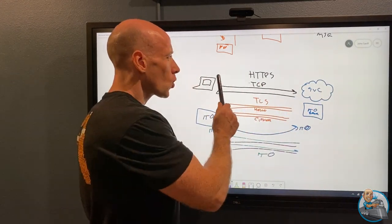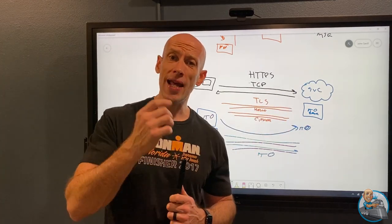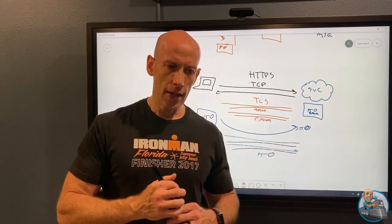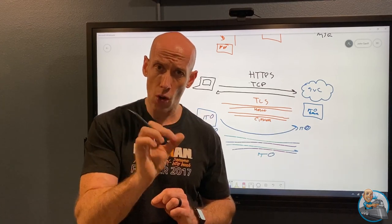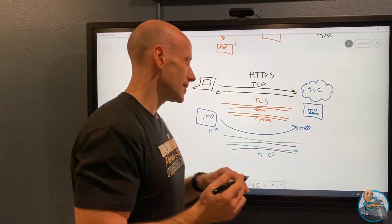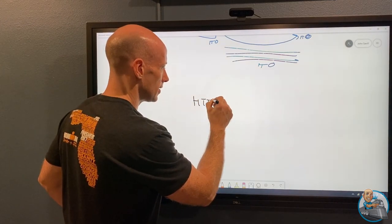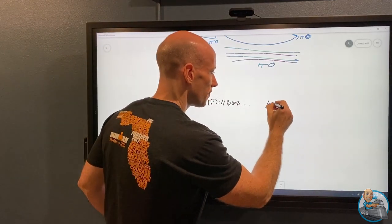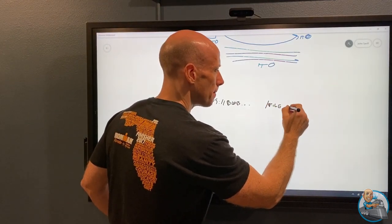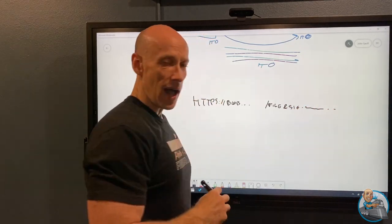When accessing storage with HTTPS, there's a shared access signature. If I want to access a certain blob in a storage account rather than making it public, I can use a shared access signature. The URL looks like HTTPS, then blob, Azure storage, the file I want, then there's a bunch of stuff — a time value — and importantly, there's a signature: a big long value at the end of the URL.